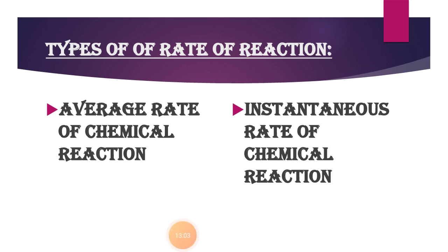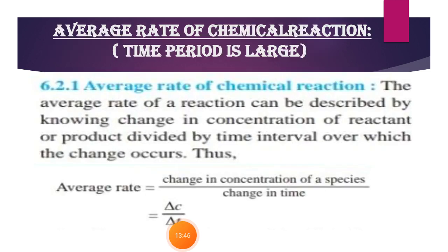The rate of reaction describes how rapidly the reactants are consumed and products are formed. There are two kinds of rate of reaction: the first one is your average rate of chemical reaction, and the second one is your instantaneous rate of chemical reaction. Let's see the average rate of chemical reaction.